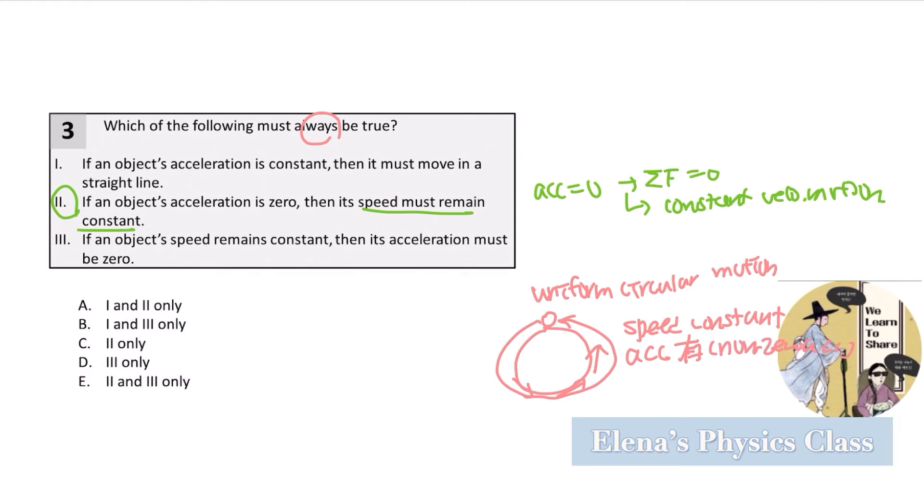And that is why, because you have an example of uniform circular motion, if an object's speed remains constant, the acceleration should not be 0. So this is wrong.